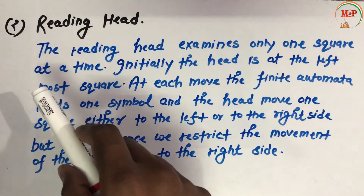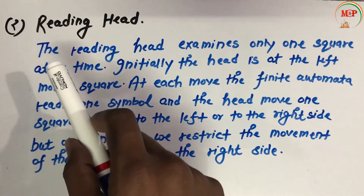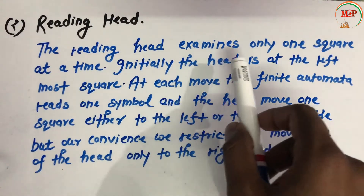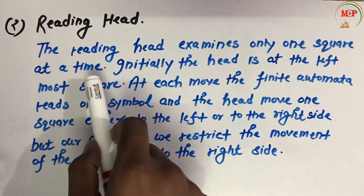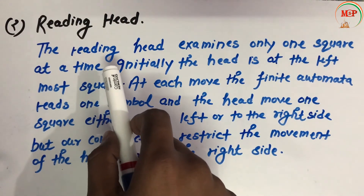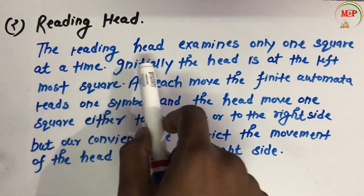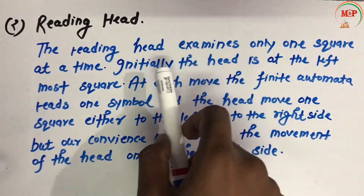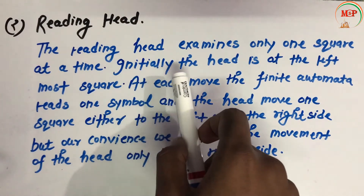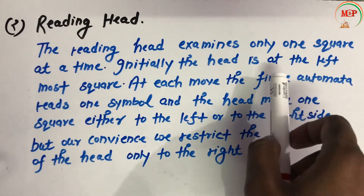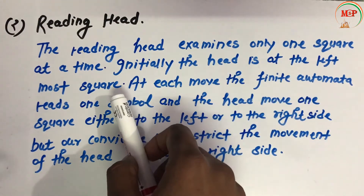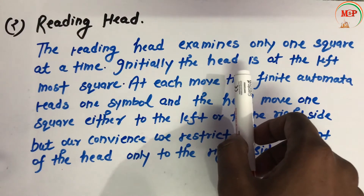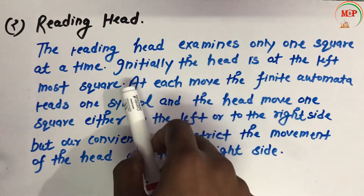Now let's see the second definition — reading head. The reading head examines only one square at a time; it checks each cell one at a time. Initially the head is at the leftmost square, meaning the head starts at the first leftmost cell.